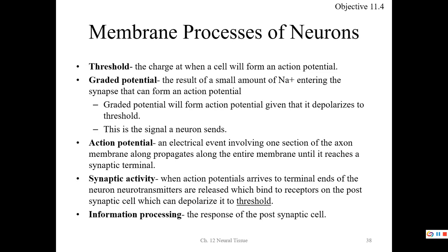The action potential travels down the axon to the synaptic terminals. When it arrives, it opens and releases neurotransmitters from the synaptic terminal. Those neurotransmitters bind to receptors on the postsynaptic cell and can depolarize that cell to threshold. Then the postsynaptic cell's response occurs — for example, muscle contraction, information processing, or gland secretion.